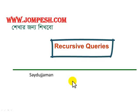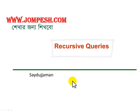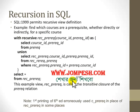Recursive Query and Recursive Programming. SQL 1999 permits recursive view definitions. For example, find which courses are prerequisite — whether directly or indirectly — for a specific course. A course may be a prerequisite directly or indirectly, and this is set up using a recursive definition.